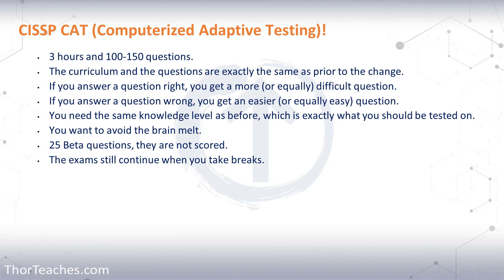One thing that is different from the CAT platform compared to the previous test is you can no longer review answers. The way the CAT platform works, when you answer a question right you get a harder question, then another harder question. If you go back three questions and change an answer, that's going to mess up the engine because everything since that question has been based on your right or wrong answers. So there's no marking for review and no option to go back and change answers. I still think that's a good thing — you don't have to worry about question 53; you can't go back, it's in the past. Forget about it and focus on the question you're actually on now.